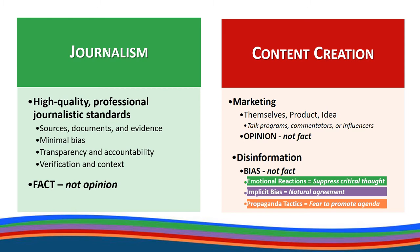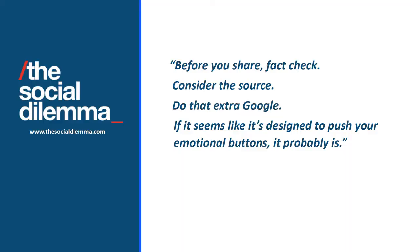Think of some of the stories or links you have shared recently. Knowing what you know now, which column would they fit under? Before you share, fact check. Consider the source. Do that extra Google search. If it seems like it's designed to push your emotional buttons, it probably is. Being digitally fluent means that we naturally verify information before we accept or share it.